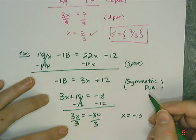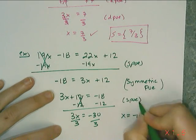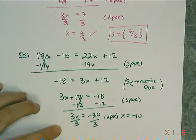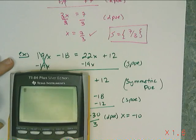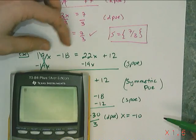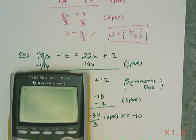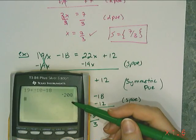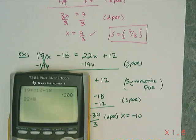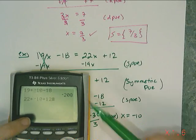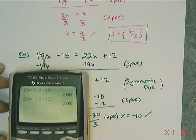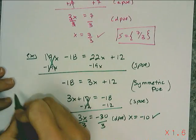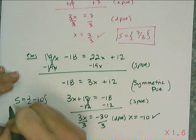All I'm using are the properties of equality — SPO and DePO. Before I'm done, I want to check it first. I need to plug my answer into both sides and make sure they're equal. So 19 times negative 10 minus 18 gives me negative 208. Then 22 times negative 10 plus 12 also gives me negative 208. So that answer has been checked and verified — my solution is negative 10.